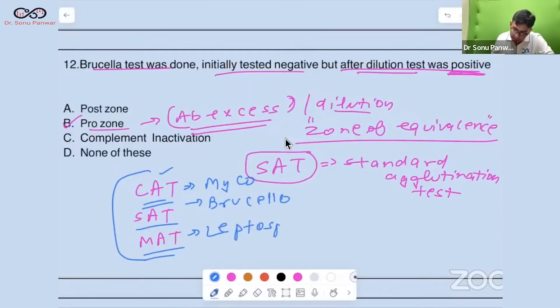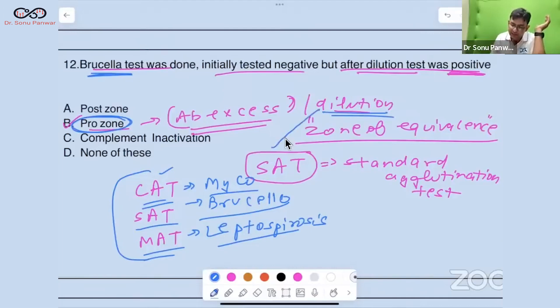So guys, prozone phenomena is famously observed in Brucellosis and this is removed after dilution. This is done with which test? SAT. A cat is sitting on a mat - CAT for Mycoplasma pneumonia, SAT for Brucellosis, and MAT for Leptospirosis.